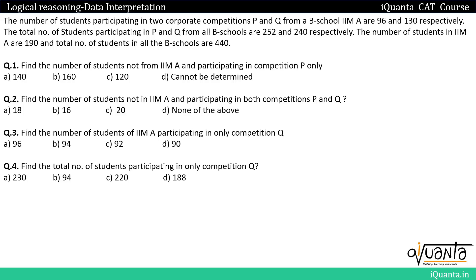Hello everyone. The question involves the number of students participating in two corporate competitions P and Q from a B school IMA, which are 96 and 130 respectively. The total number of students participating in P and Q from all B schools are 252 and 240 respectively.